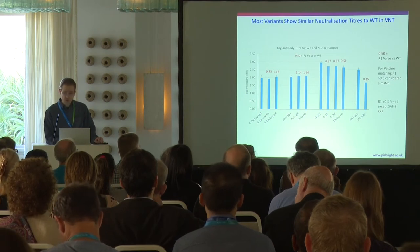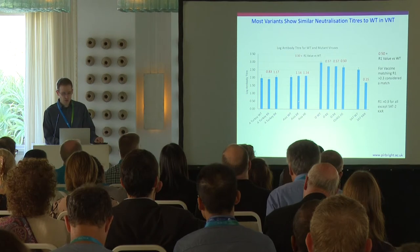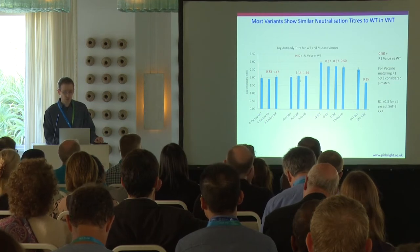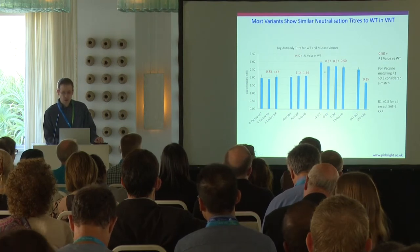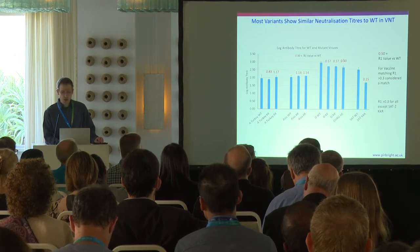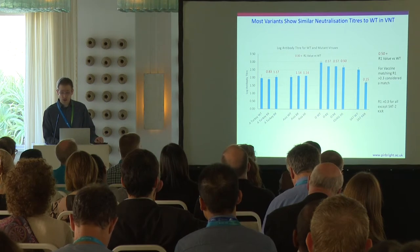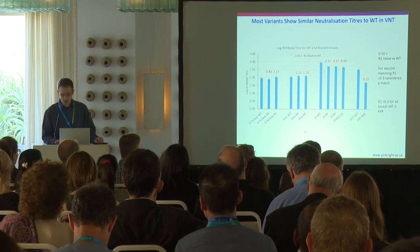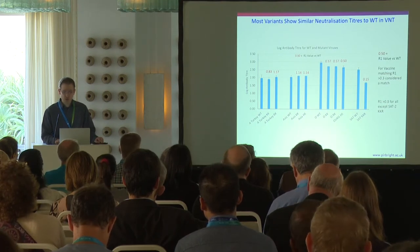This graph shows a summary of all the data from the VNTs for all the viruses. The blue bars are the log neutralization titer and the R1 value is in red above. For the A's and the Asia's, there is no noticeable difference between the neutralization titers between the mutants and the wild-type capsid-carrying viruses. For the O's, there was a slight reduction in neutralization titer, but the R1 value remained well above the 0.3 cutoff. However, for the SATs, we did see quite a reduction in neutralization titer and the R1 value is around 0.15, which would require further experiments. For the vast majority of viruses, there is not a huge difference in VNT titers, indicating not a great difference in antigenicity.